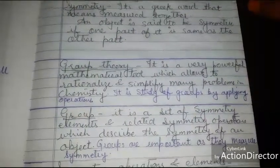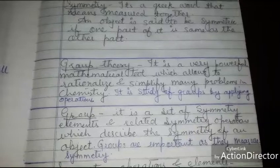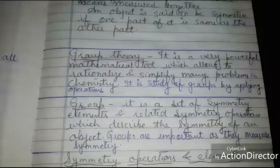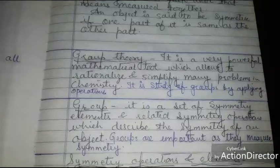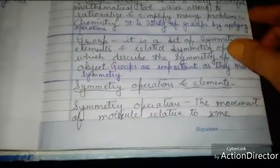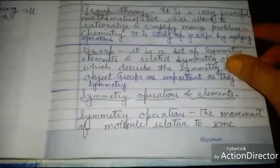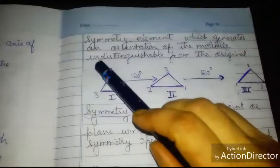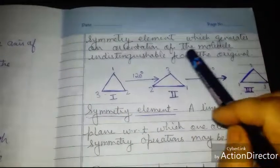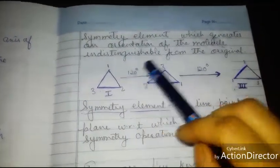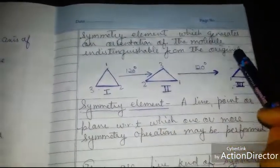Now let us discuss a few terms: symmetry operations and elements. A symmetry operation is the movement of a molecule relative to a symmetry element which generates an orientation of the molecule that is indistinguishable from the original.